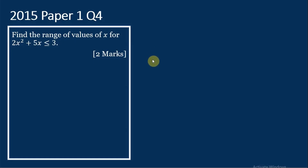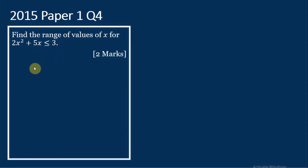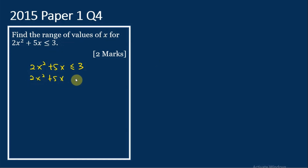Now let's see this example. This is a past exam question, 2015, paper 1, question 4: Find the range of values of x for 2x squared plus 5x less than or equal to 3. So this is a quadratic inequality. Let's write down the inequality: 2x squared plus 5x less than or equal to 3, therefore 2x squared plus 5x minus 3 less than or equal to 0.